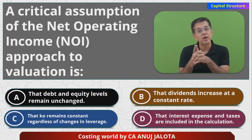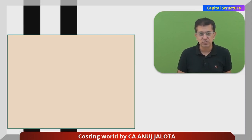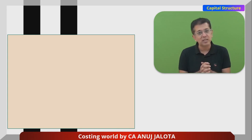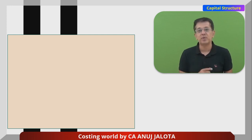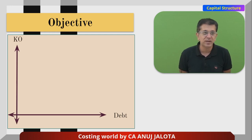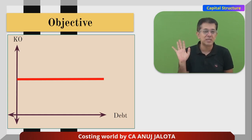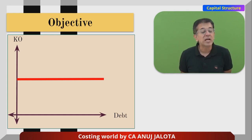Then the NOI approach — the Net Operating Income approach — came along, and later Modigliani and Miller also joined this approach. These guys were always of the view that it does not matter what the level of debt or equity is — Ko ultimately is nothing but return on investment, and return on investment always remains the same irrespective of the debt-equity mix. If you try to explain this through a graph, on the x-axis we have debt and on the y-axis we have Ko — no matter you increase or decrease the debt, Ko will always remain constant. It will be a line running parallel to the x-axis.